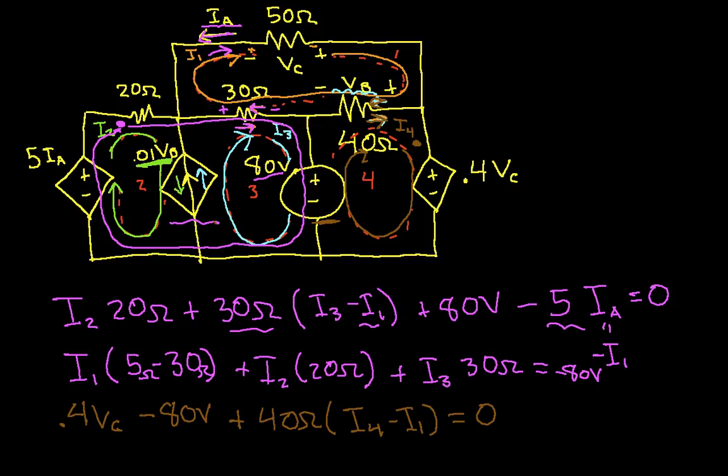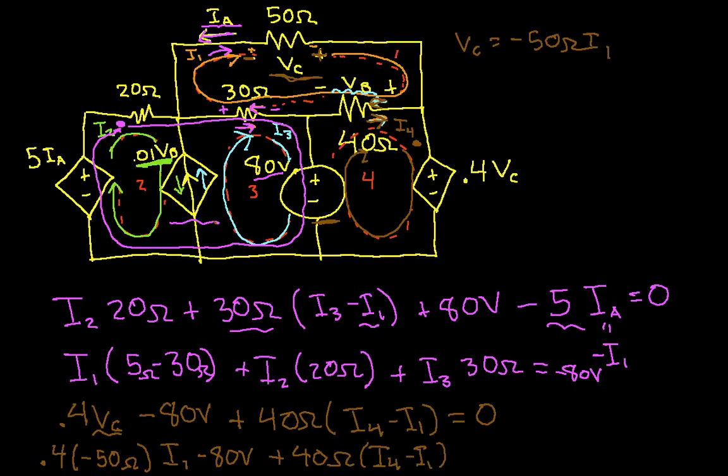Okay, so to simplify this a little bit, we notice that V sub C is up here. And it's the voltage across this 50 ohm resistor, which means that, and we've got it labeled plus to minus. So V sub C will be minus 50 ohms times I1. And we can plug that in down here, and we get then that we have 0.4 times minus 50 ohms times I1 minus 80 volts plus 40 ohms I4 minus I1. And this is equal to 0.